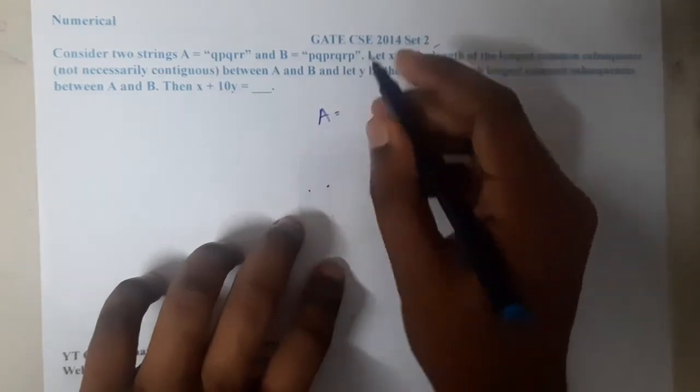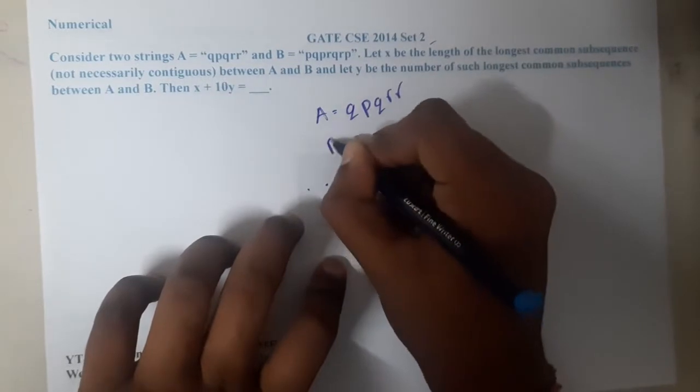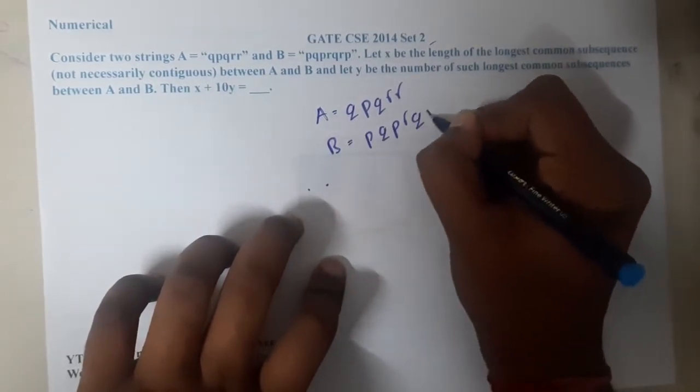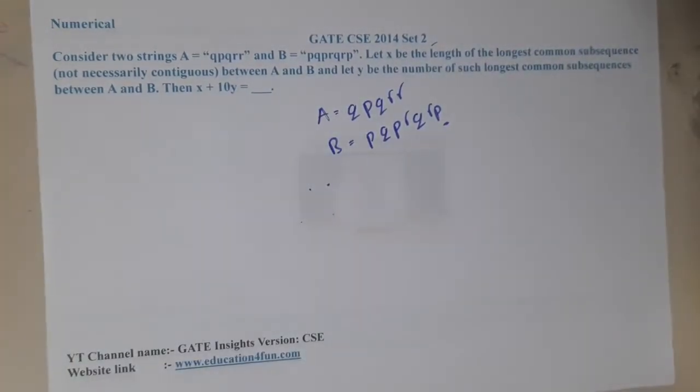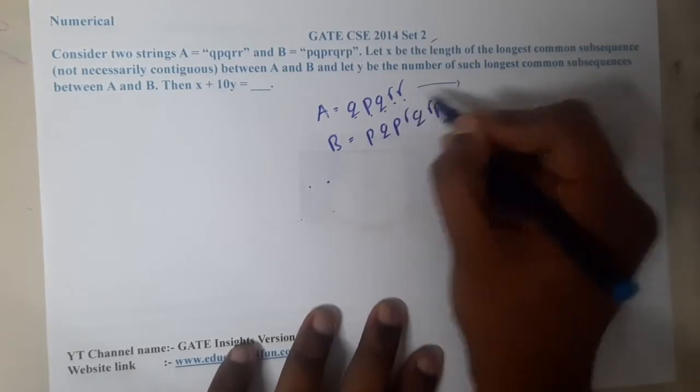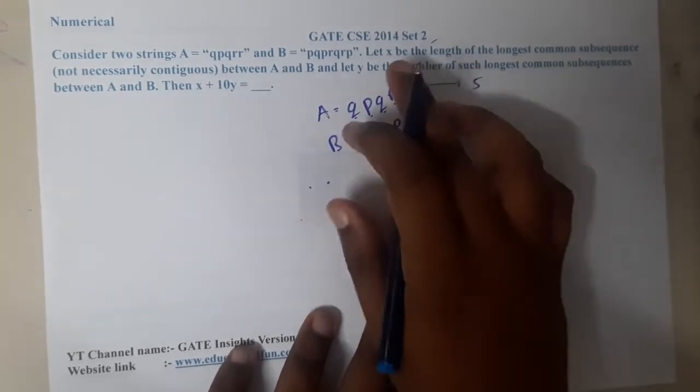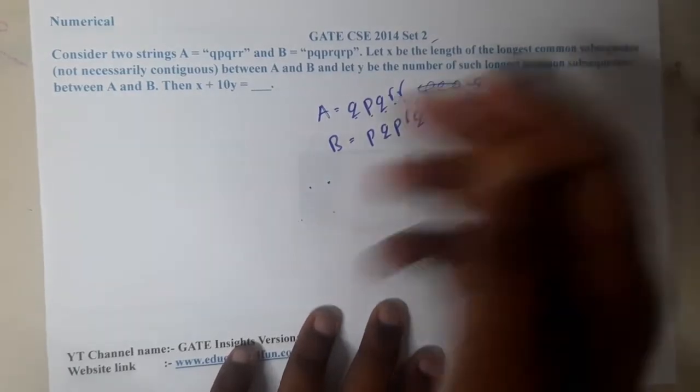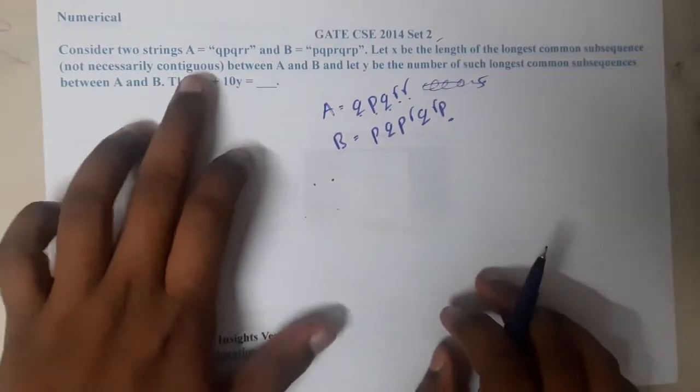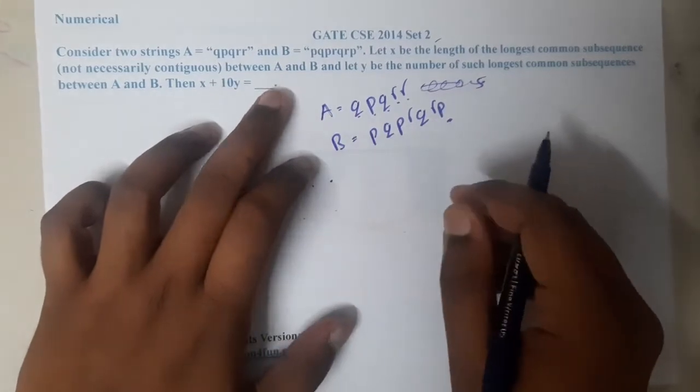The question is: Consider two strings A = 'qpqrr' and string B = 'pqprqrp'. Let x be the length of the longest common subsequence (not necessarily continuous) between A and B. Let y be the number of such common subsequences.